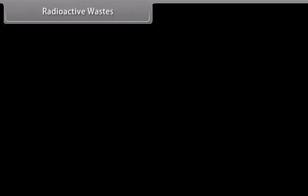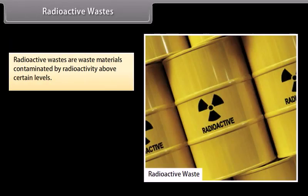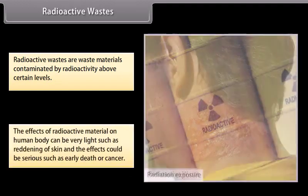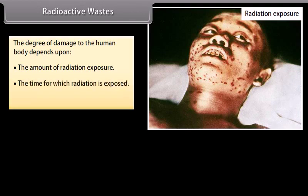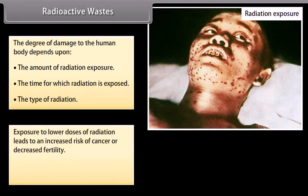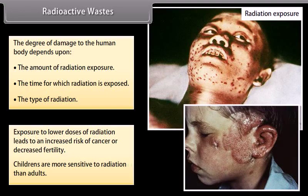Radioactive wastes are waste materials contaminated by radioactivity above certain levels. The effects of radioactive material on the human body can be very light, such as reddening of skin, or could be serious such as early death or cancer. The degree of damage depends upon the amount of radiation exposure, the time for which radiation is exposed, and the type of radiation. Exposure to lower doses of radiation leads to an increased risk of cancer or decreased fertility. Children are more sensitive to radiation than adults.